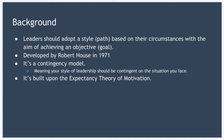Now Robert House originally developed path-goal theory in 1971 and the theory belongs to a group of leadership models called contingency models. And all contingency models share one thing in common: they state that you should change your style of leadership contingent on the situation you face.